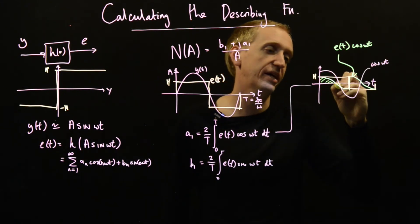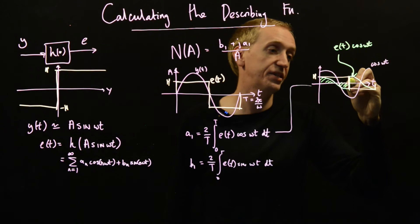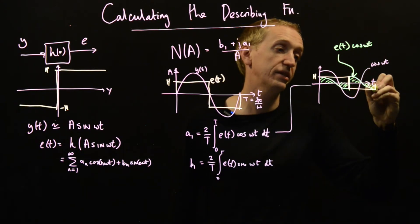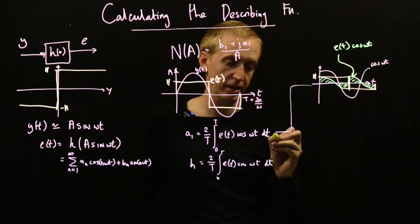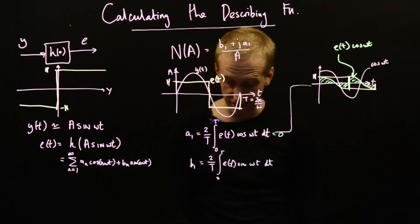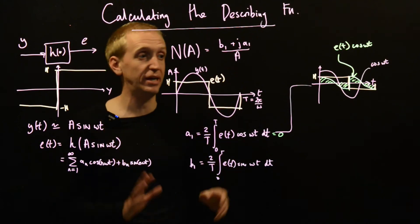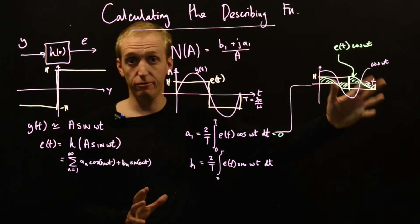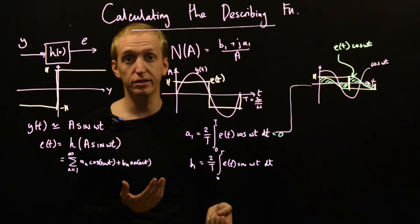And you see actually that this area cancels with this area. And similarly, this area cancels with this area. So this whole integral actually is just equal to zero. So a₁ is equal to zero. And maybe this is ringing more bells in the back of your mind.